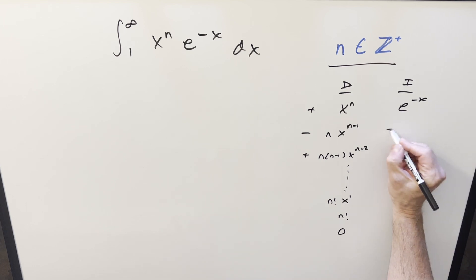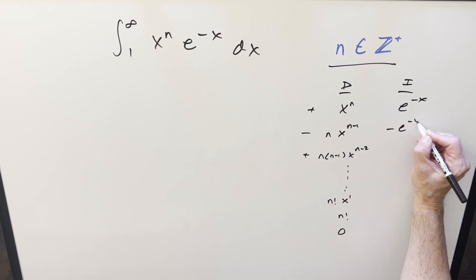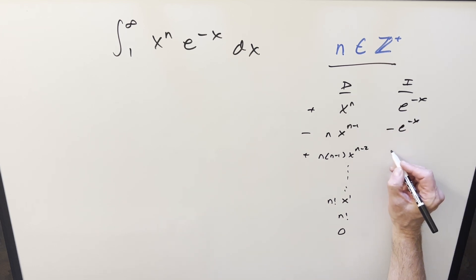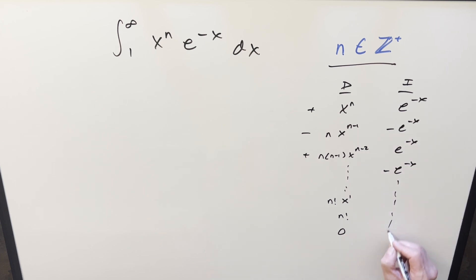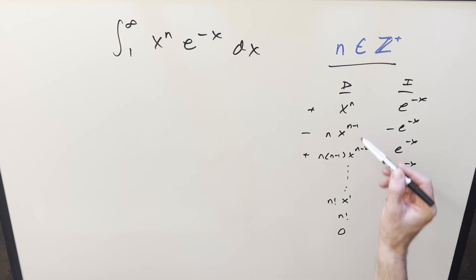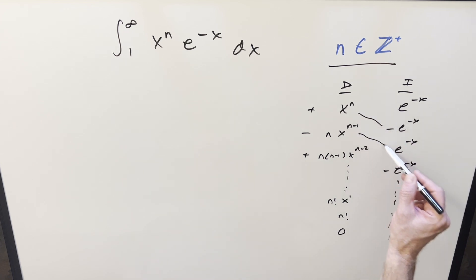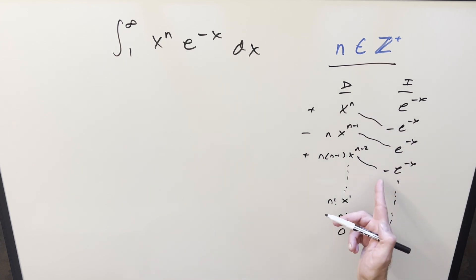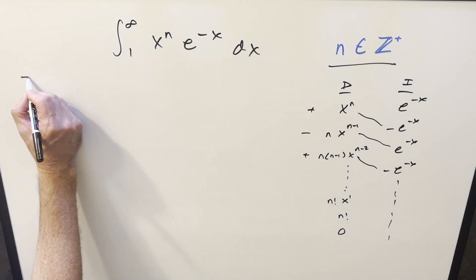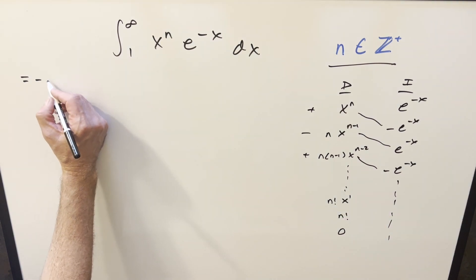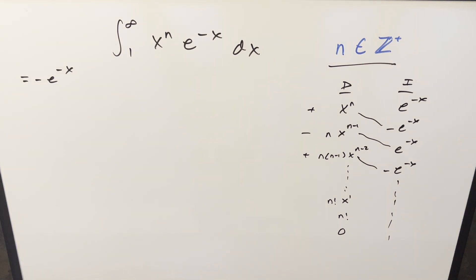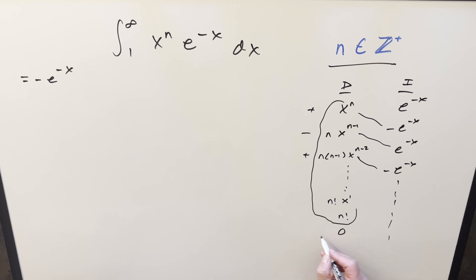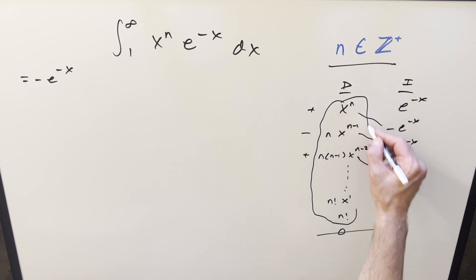Over here the integrals are easy — it's just going to be alternating sign because the minus sign in front is going to pop out. So the next one's going to be positive, then negative, and this keeps going all the way. As part of our solution on the diagonals, notice that each one of these is going to be negative. So what I'll do is factor out minus e to the minus x, and then copy down all this stuff — it's all going to be positive. Leaving off the zero, of course, we're not going to be integrating zero.